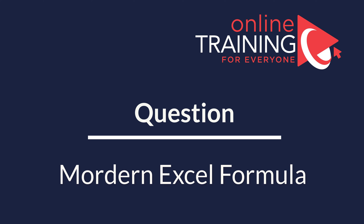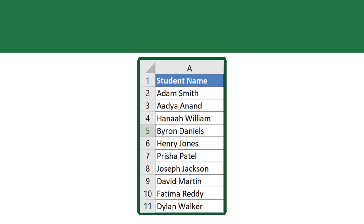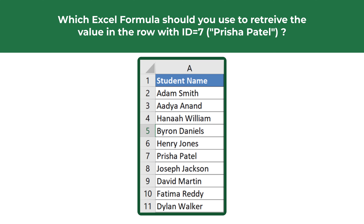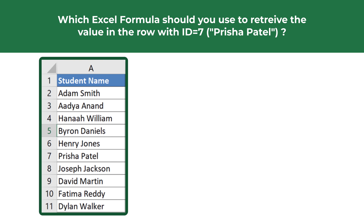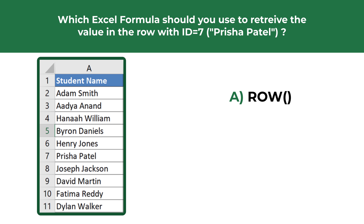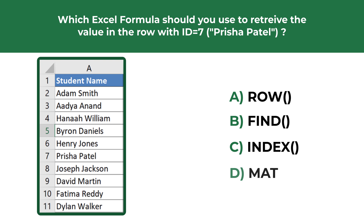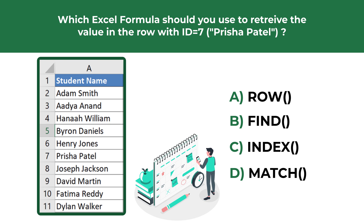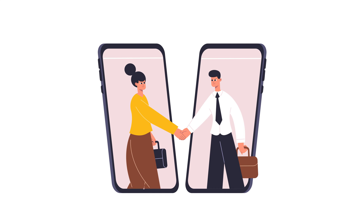Here's a question which tests your knowledge of modern Excel formulas. You're presented with a list of student names in column A and you need to decide which Excel formula to use to retrieve the value of the row with ID 7 — the value in this row is Prisha Patel. You have four choices: A) ROW, B) FIND, C) INDEX, and D) MATCH. Give yourself 10 to 20 seconds to come up with the right solution.